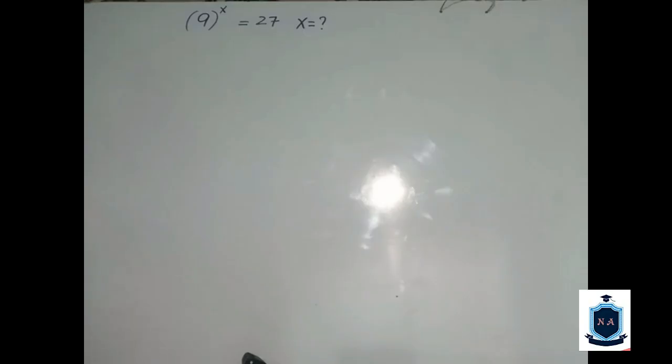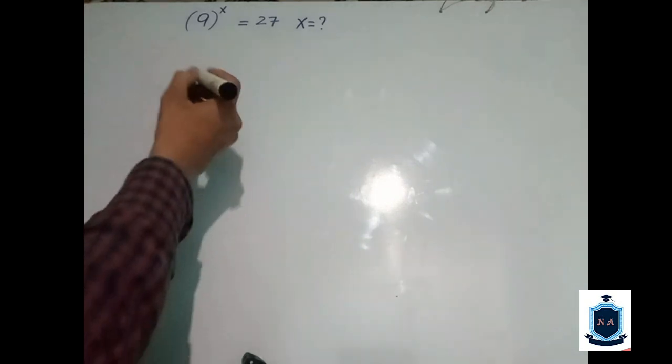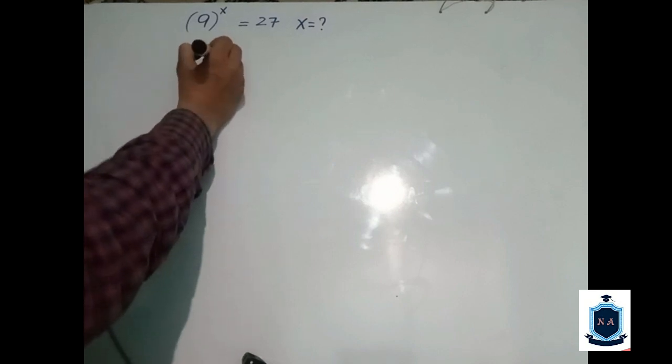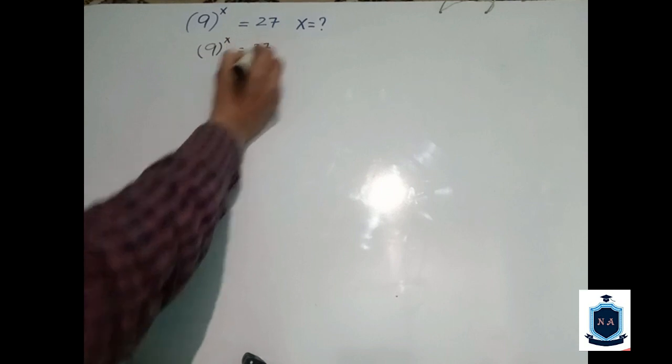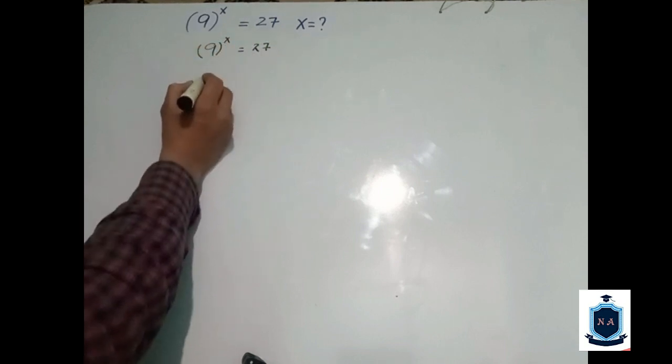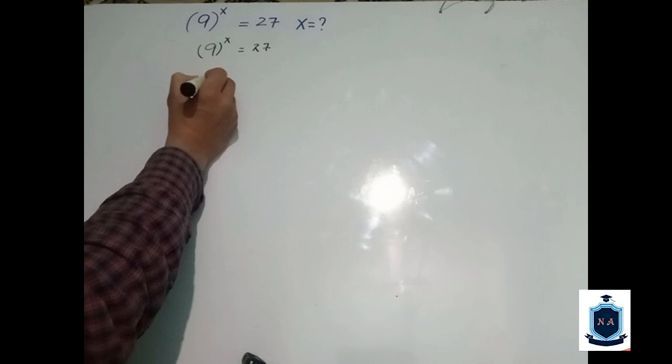In this question I will tell you how to find the value of x in this equation. Simply we have to write 9 power x equal to 27. Then we know that 9 is the square of 3.